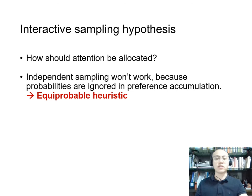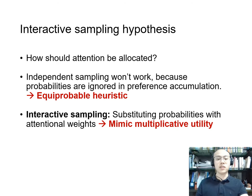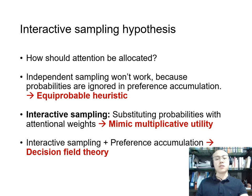Independent sampling won't work, because if independent sampling is combined with the ADDM, the probabilities are totally ignored in the preference accumulation process, reducing the ADDM to the equal-probability heuristic. By contrast, interactive sampling works because it substitutes probabilities with attentional weights, making the ADDM mimic multiplicative utility calculation via an additive preference accumulation process. Interestingly, we find that interactive sampling combined with the ADDM's preference accumulation leads to decision field theory.